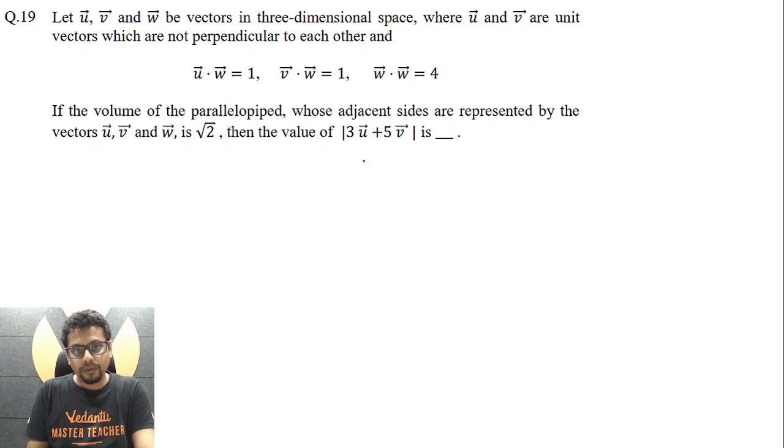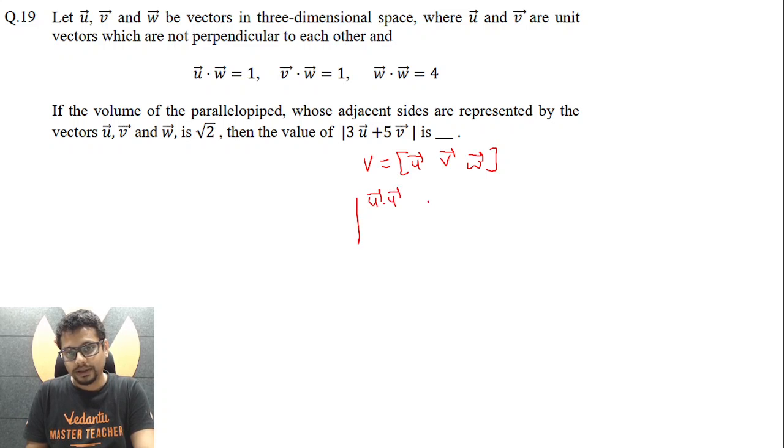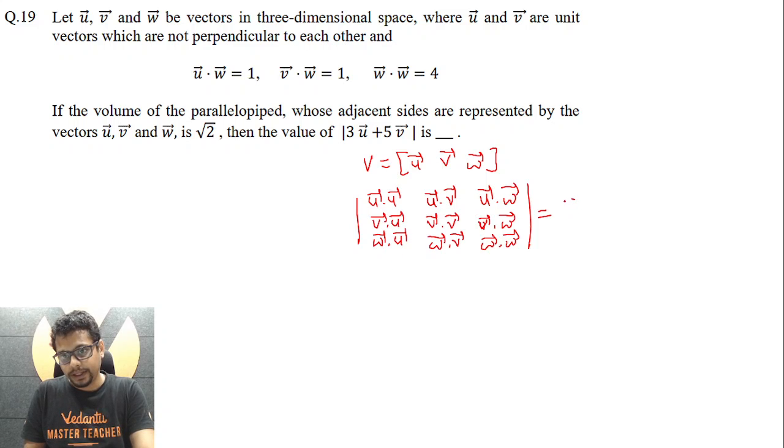So volume of parallelepiped would essentially be box product of u vector, v vector, w vector, and the square of which is essentially u vector dot u vector, u vector dot v vector, u vector dot w vector, so and so forth. So this is supposed to be square of box product of u vector, v vector, w vector. Now this is given to us as root two, so that means this becomes root two whole square which is two.